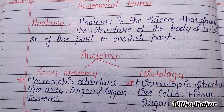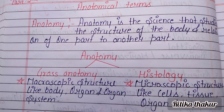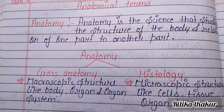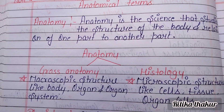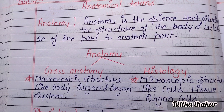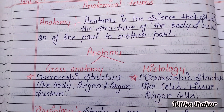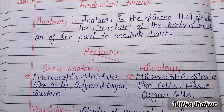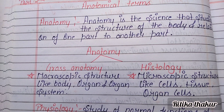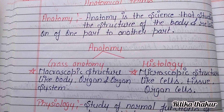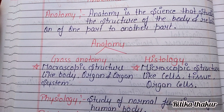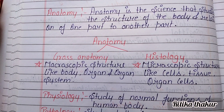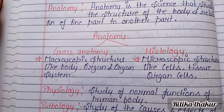Anatomy is a science that studies the structure of the body in relation of one part to another part. Anatomy includes gross anatomy, and histology, which covers microscopic structures like the body, organ, and organ system.